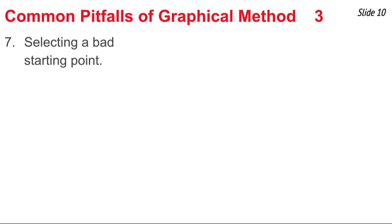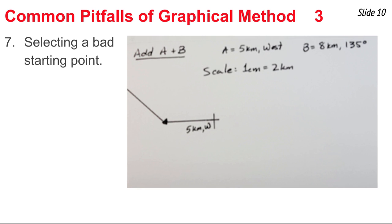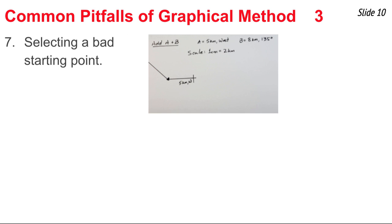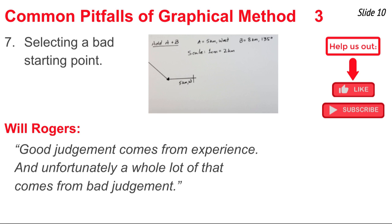The seventh and final pitfall involves selecting a bad starting point. For example, adding a west vector A and then a northwest vector B — if you start too far to the right, by the time you draw vector B you've gone off the page. Starting in the bottom right would have easily fit both vectors. As Will Rogers said, good judgment comes from experience, and a lot of that comes from bad judgment. To master the graphical method of vector addition, you have to practice, practice, practice.